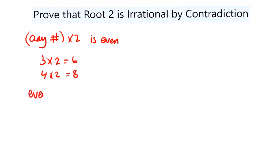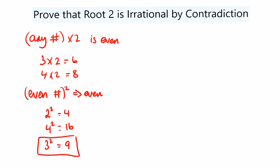And any even number squared is also even. Just check a few of these: 2 squared is 4, 4 squared is 16 and so on. 3 squared is 9, it's odd. So an even number squared is even and any number times 2 is even.